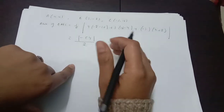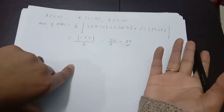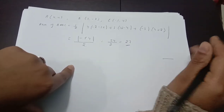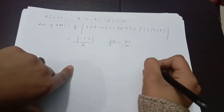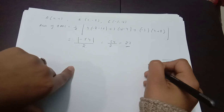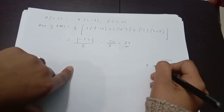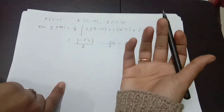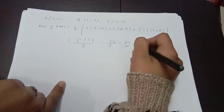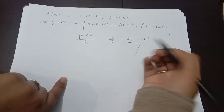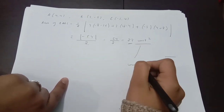When solving for distance or area, don't forget to add units. For distance, the unit is simply the unit of length (e.g., cm, m). For area, the unit is square units. And if volume were to be asked, the unit would be cubic units.